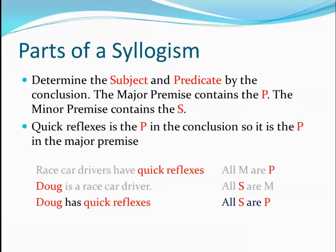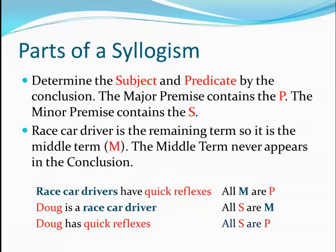'Quick reflexes' is the predicate term of the conclusion and it must appear in the major premise. In this example, it appears in the predicate position of the major premise, though the predicate term could also appear in the subject position — for instance, the major premise might have said 'people with quick reflexes are race car drivers.' The remaining term, appearing once in the major premise and once in the minor premise but never in the conclusion, is called the middle term. It provides the link between the two premises that lead to the conclusion. In this example, 'race car drivers' is the middle term.